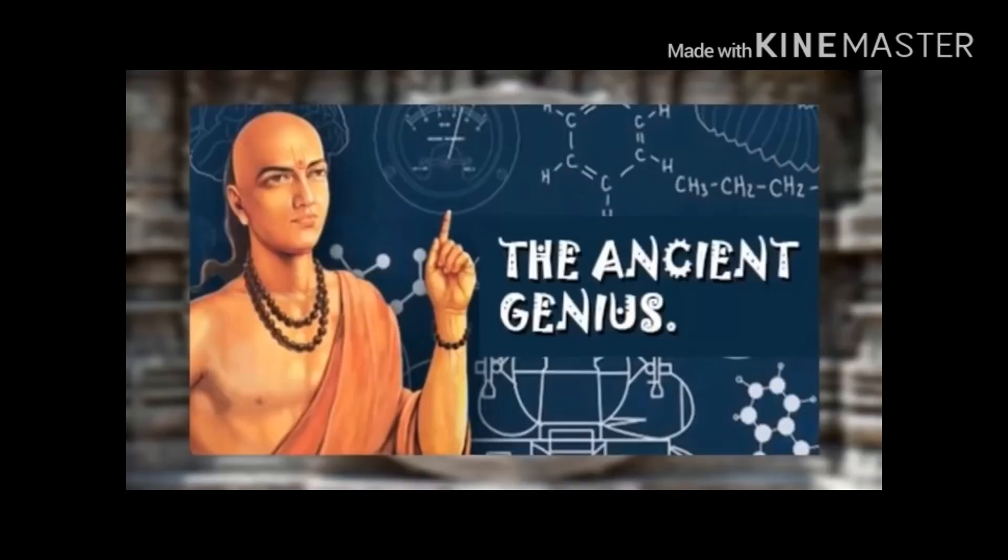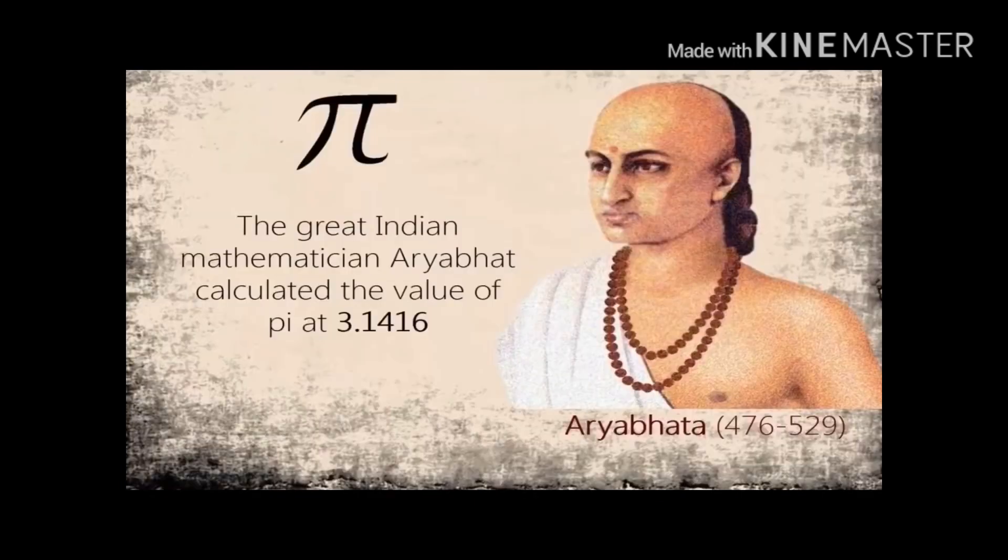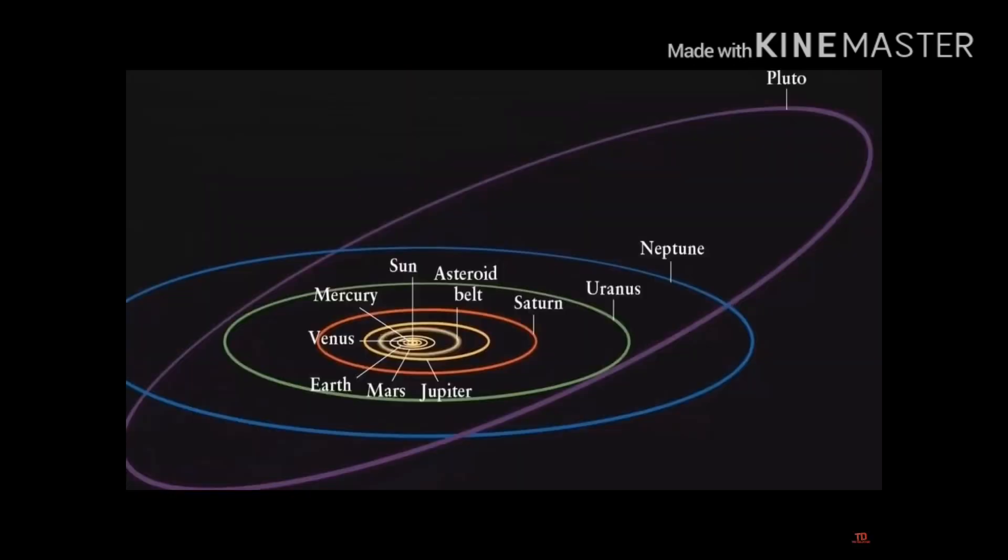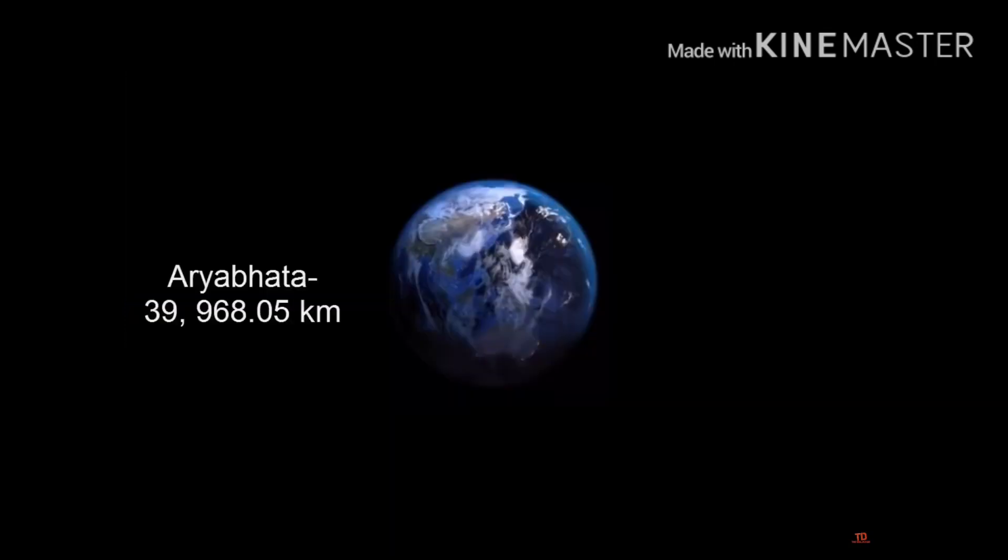Now we study about the greatest of Indian sages, Aryabhata. He exactly calculated the value of pi up to 4 decimals. Somehow he found that sun is the center of the solar system and earth and all other planets are revolving around the sun. He also calculated the circumference of the earth.